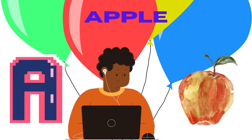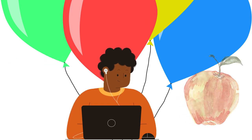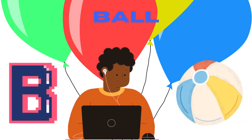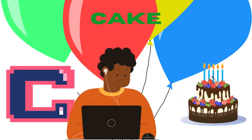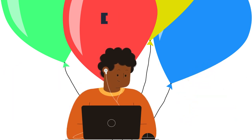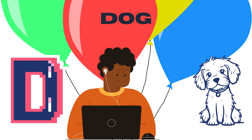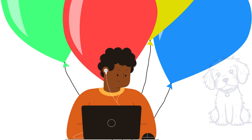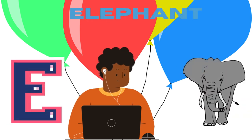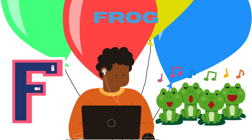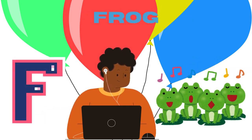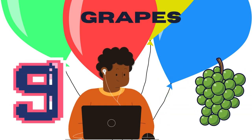A for apple, B for bun, C for cake, D for dog, E for elephant, F for frog, G for grapes.